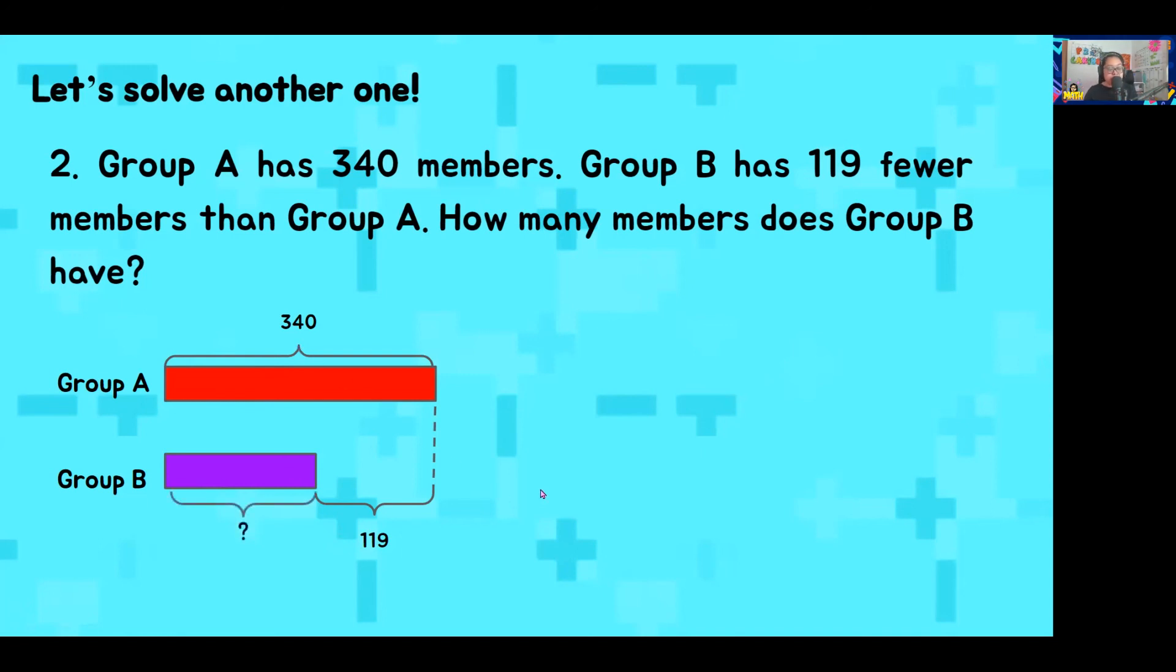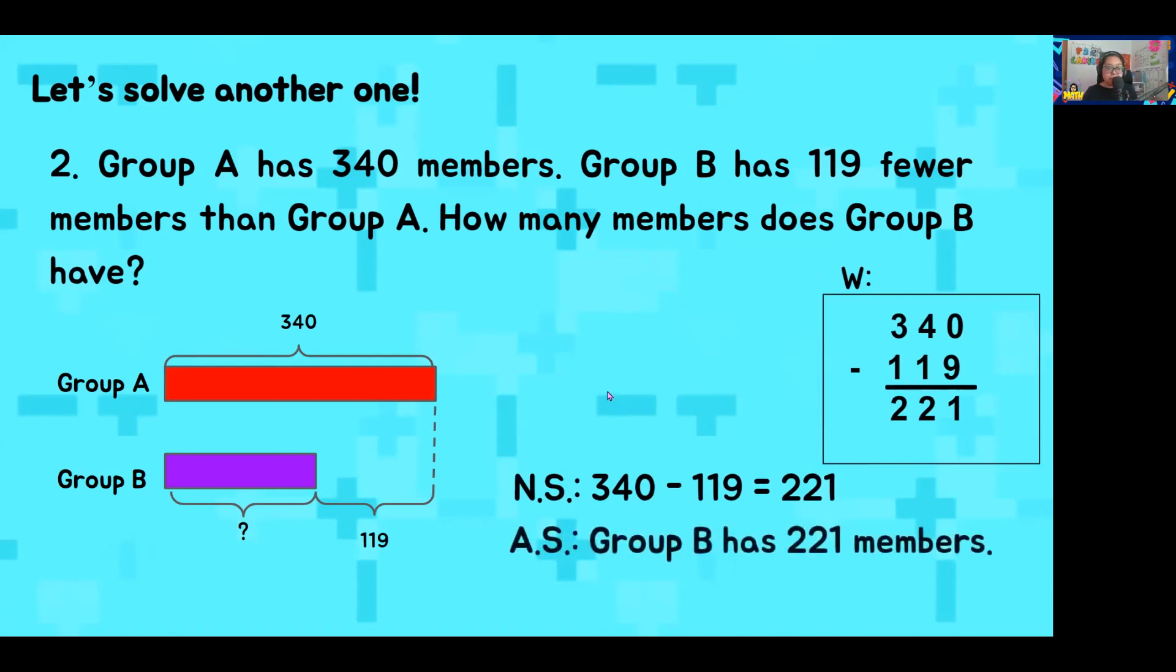And of course, the last part is the question mark because we want to know how many members does Group B have. Now, let's look at this model. Should we add or subtract? If you answered addition, unfortunately, no, we will not add this time. But if you answered subtraction, you are correct. We will need to subtract. And following the working, the correct answer, 340 minus 119 will give you 221. The number sentence should also show the same. And your answer statement: Group B has 221 members.